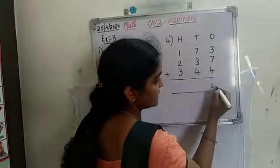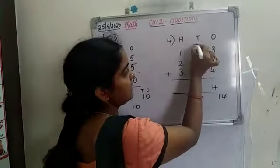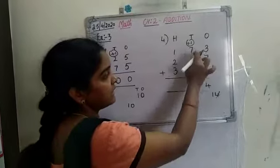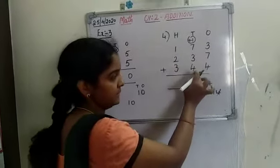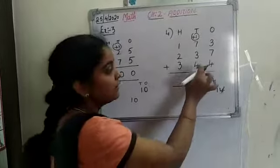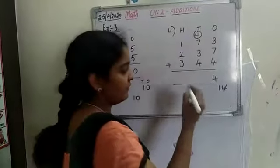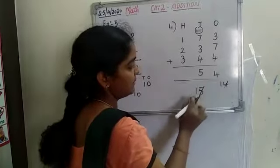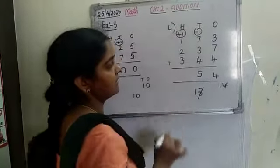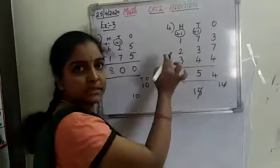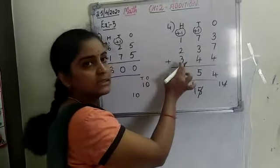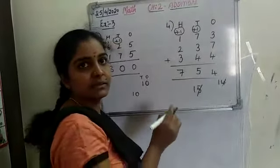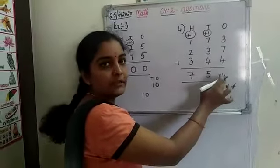So write 4 in ones place and 1 will be the carry over. Now add all these 3 tens-place numbers: 7 plus 3 is 10, 10 plus 4 is 14, and 14 plus 1 carry over is 15. So write 5 in the tens place and 1 will be the carry over. Now 1 plus 2 is 3, 3 plus 3 is 6, and 6 plus 1 is 7. So our answer is 754.